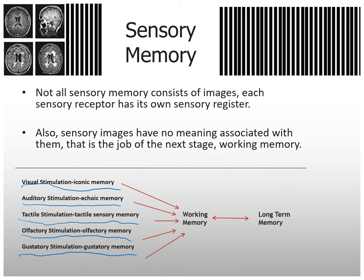Working memory, or short-term memory, is where you make sense of what just came in. Then you send it to your long-term memory — if it gets past working memory, which most things you end up forgetting. Once it's in long-term memory, it stays there until you need it for something.